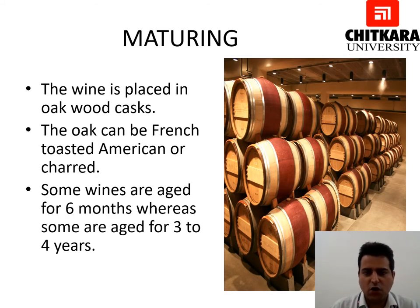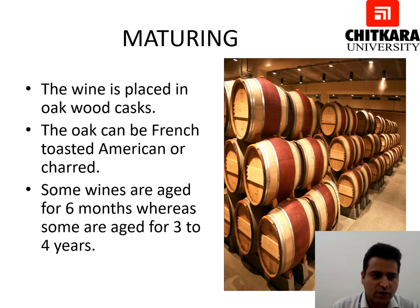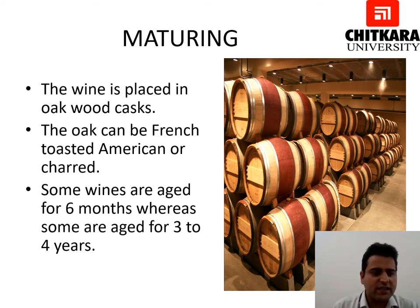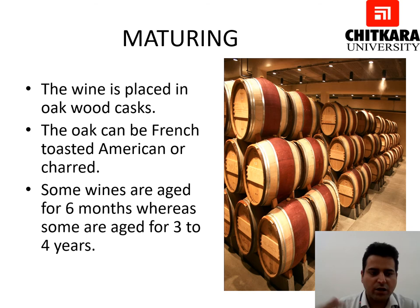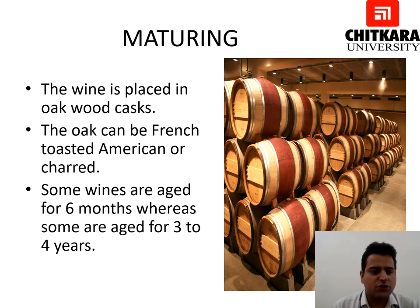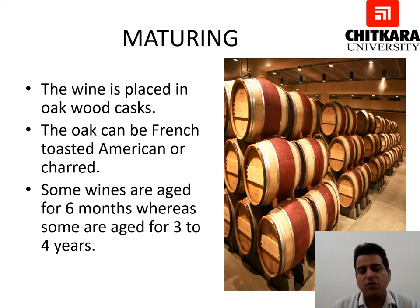The next step is maturing or aging. The wine is placed in oak wood casks, which can be French, American, or from other origins. During aging, the wine absorbs vanilla flavor from the oak. Some evaporation takes place, and the space created is topped up with wine to prevent spoilage. Wine is transferred to another cask and the lees produced by yeast are left behind. Some wines are aged for six months whereas some are aged for three to four years. Stainless steel tanks are becoming very popular for aging as they are very economical.